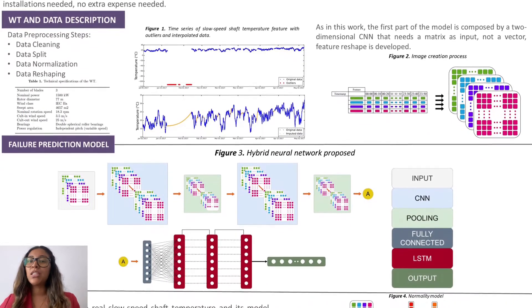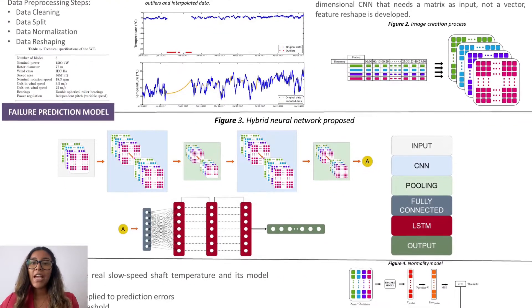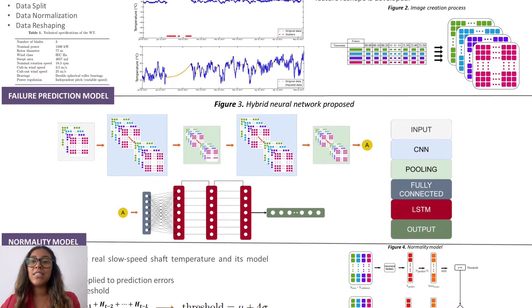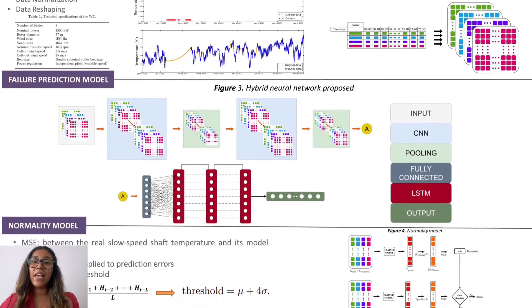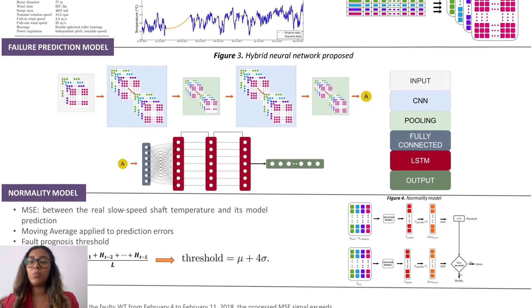In this work, we use SCADA data, a system installed in every industrial-size wind turbine. The network consists of a 2D CNN sequentially connected with an LSTM to predict slow speed shaft temperature, the closest to the main bearing.